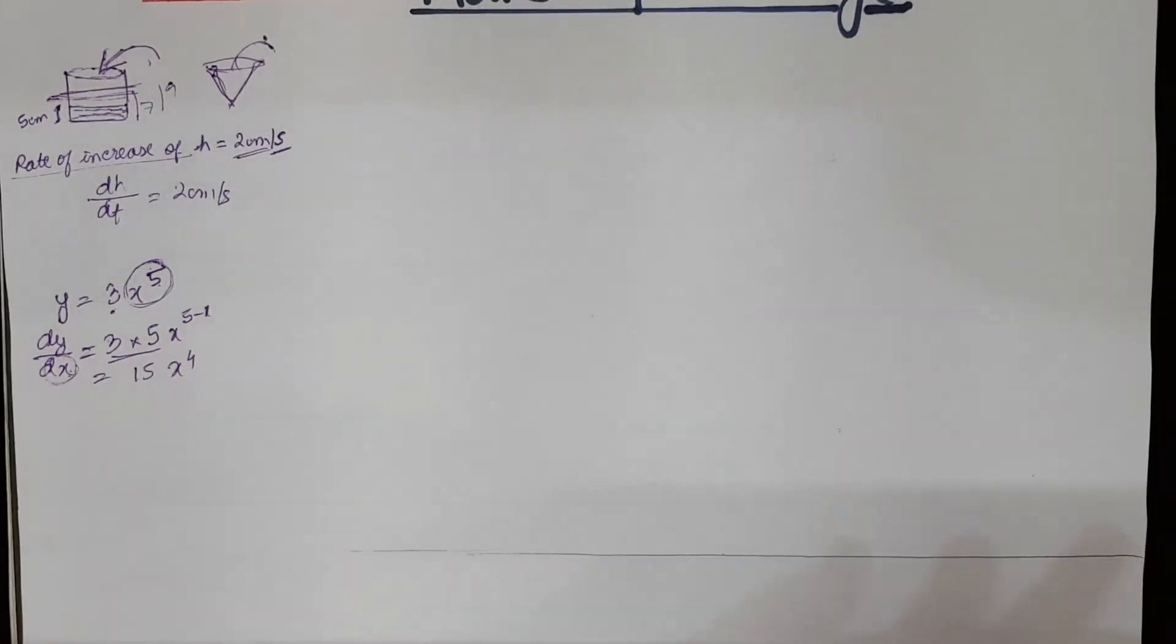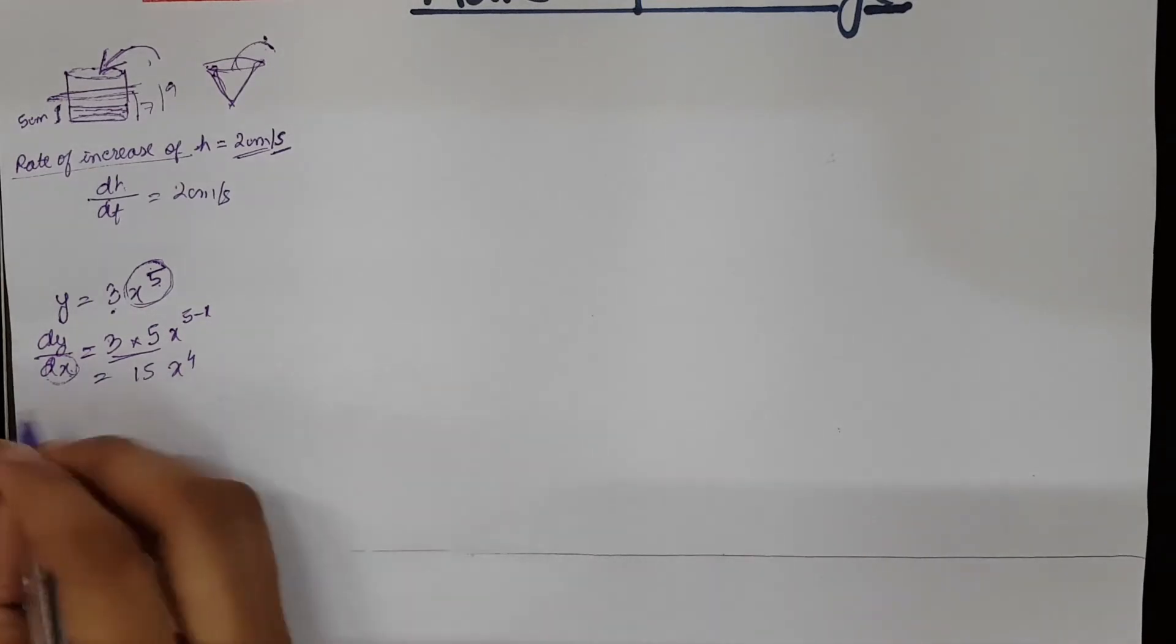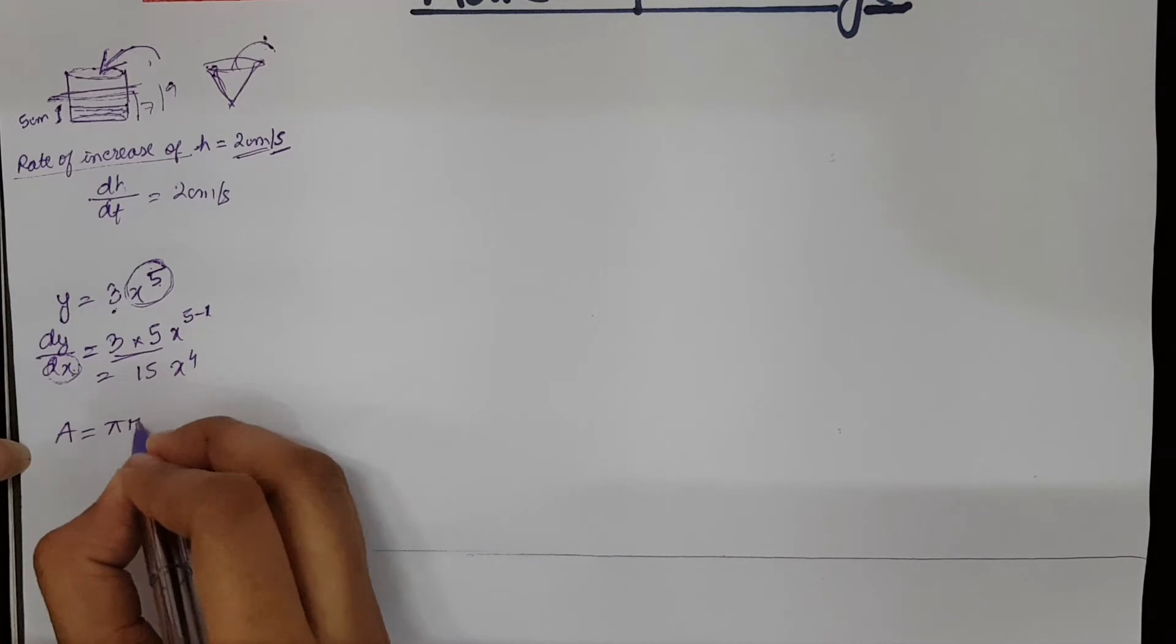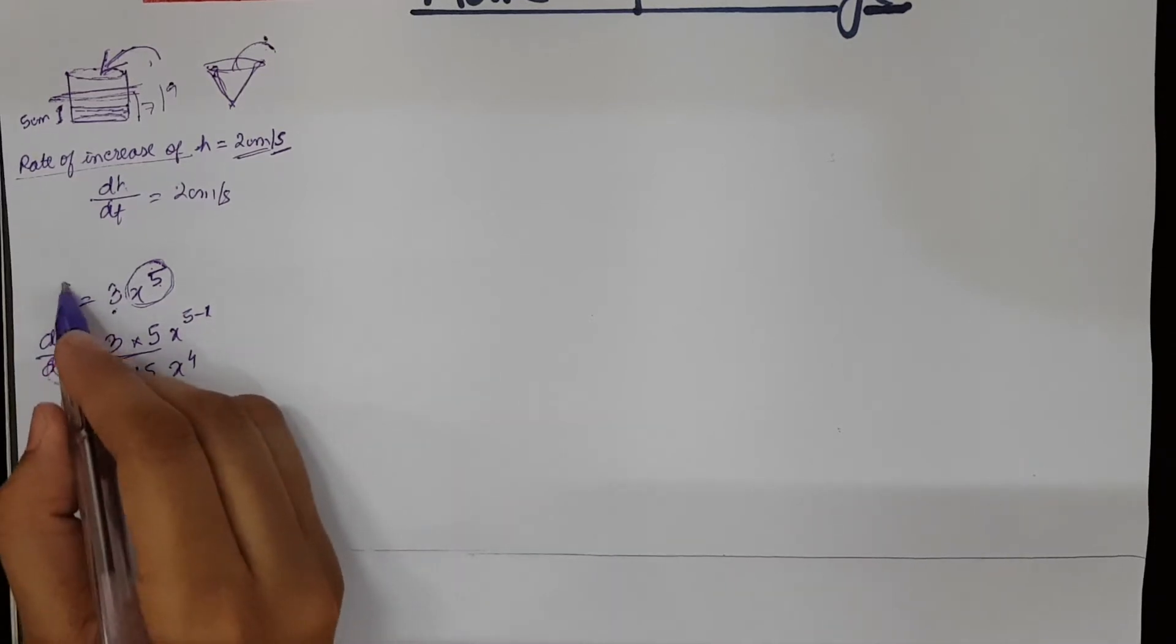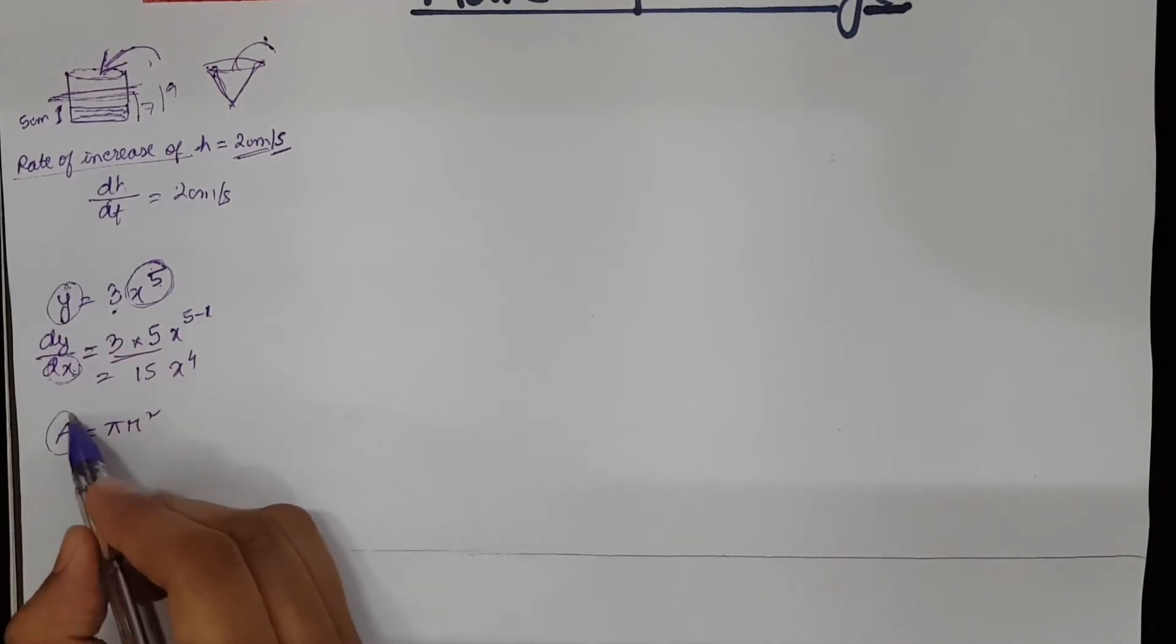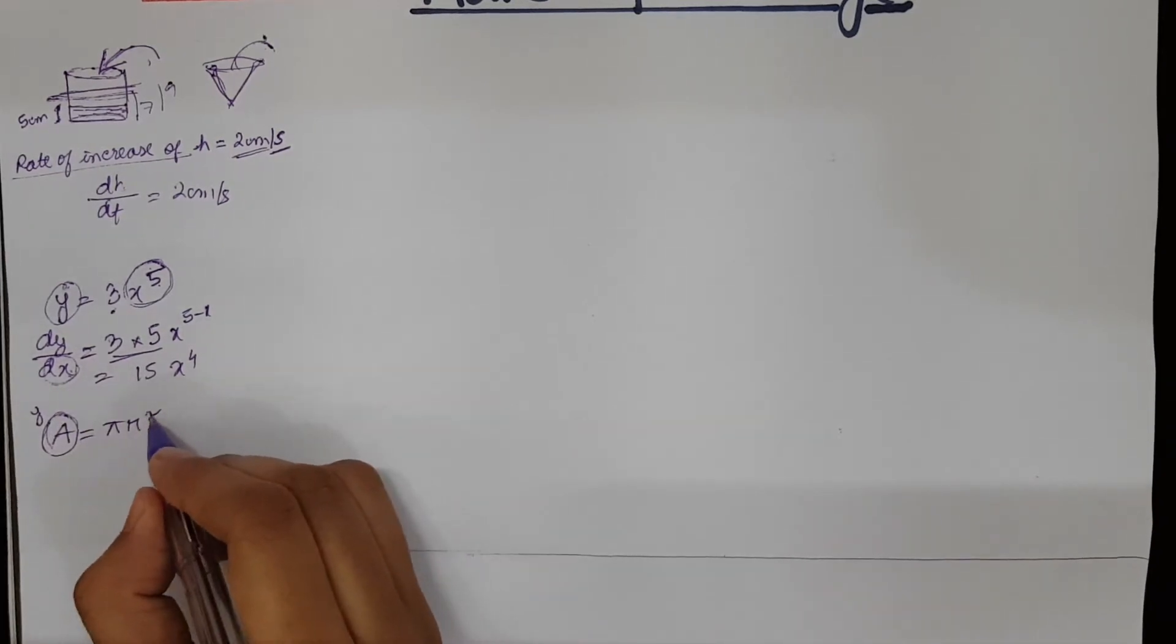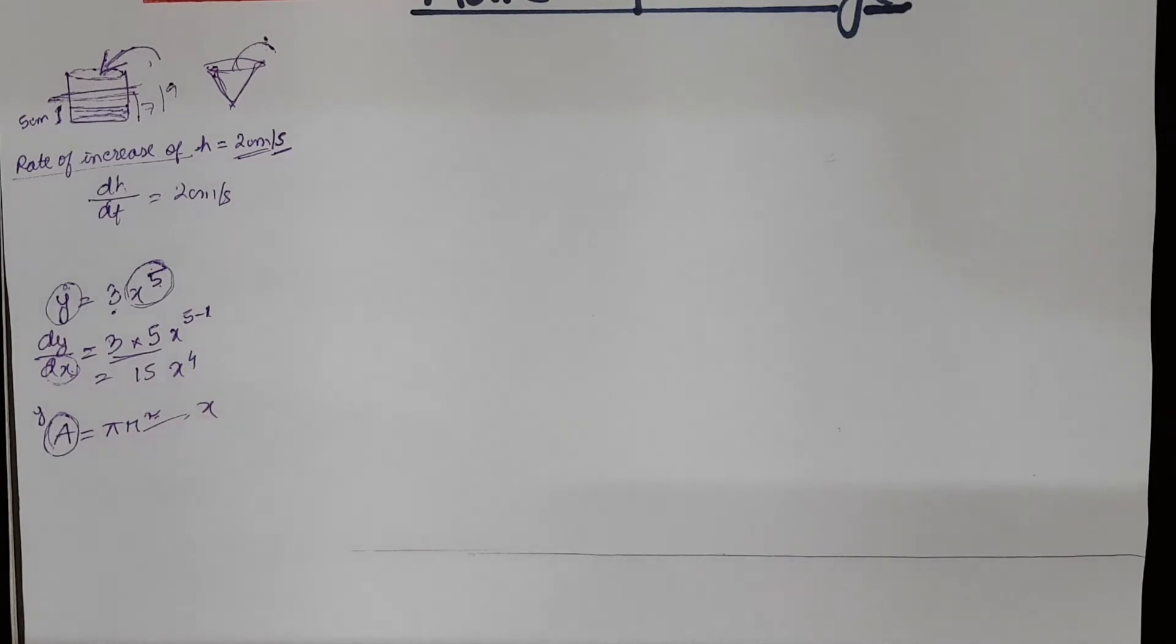So in this rate of change things, suppose you have a math of circle. So the area formula is πr². So here y is the subject of the equation. Similarly, area is the subject of the equation. So we can treat area as y and the radius as x. And π is just a simple constant. So we can treat that as a number.